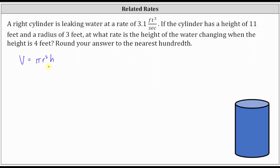We know the water is leaking at a rate of 3.1 cubic feet per second. This is the change in volume with respect to time, which we represent as dV/dt. dV/dt equals negative 3.1 cubic feet per second. We're using negative here because the water is leaking from the tank, not filling the tank.